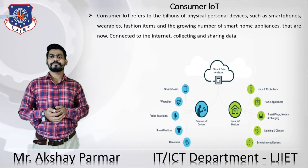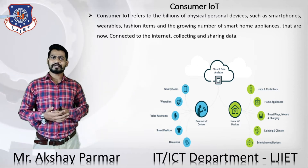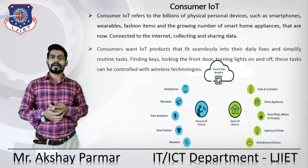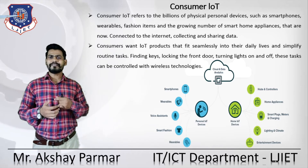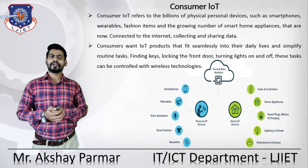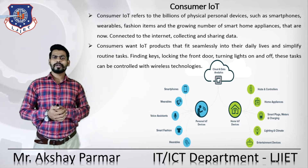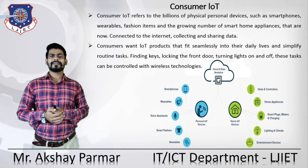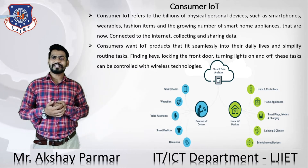Consumer IoT refers to the billions of physical personal devices such as smartphones, wearable fashion items, and the growing number of smart home appliances connected to the internet and sharing data. Consumers want IoT products that fit seamlessly into their daily lives — routine tasks like finding keys, locking the front door, and turning lights on and off can be controlled wirelessly through home automation, using your smartphone without needing to get up physically.